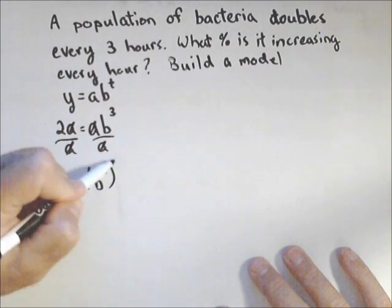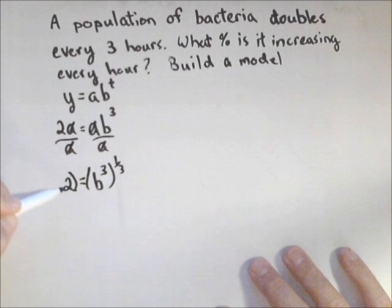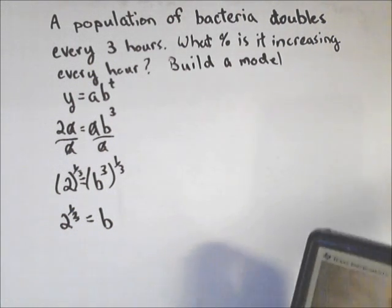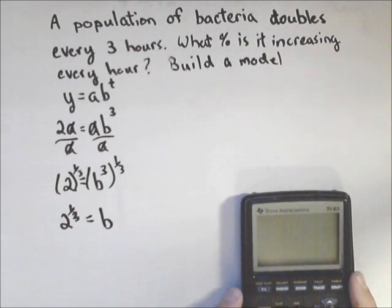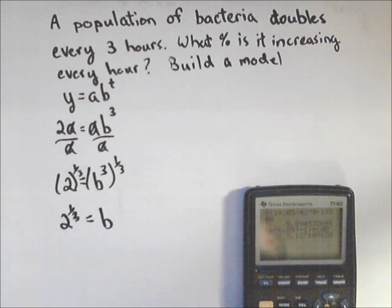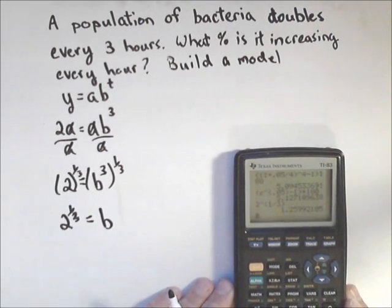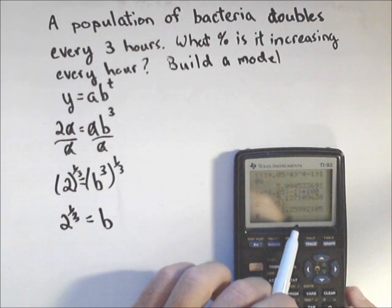Now to solve this for b, I'm going to take both sides to the one-third, and I get b equals two to the one-third. Now let's answer our first question, and then I'll talk about a shortcut. The question said, what percent is it going up by every hour? Well first off, we need to do two raised to the one-third, and that one-third does have to go in a set of parentheses. And you can see there I get 1.25992105.